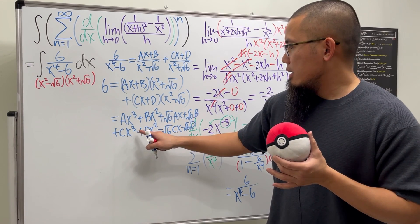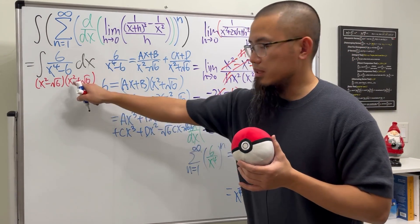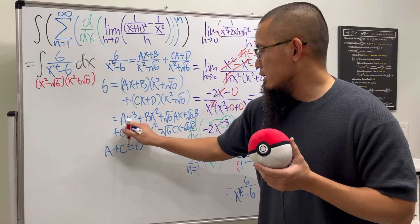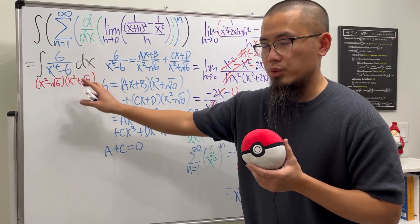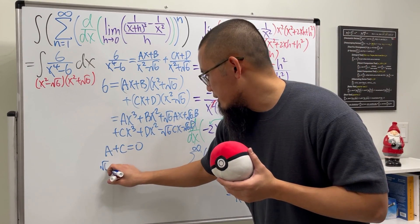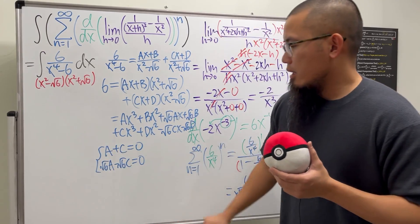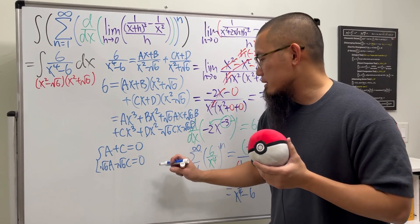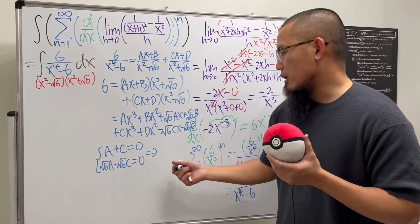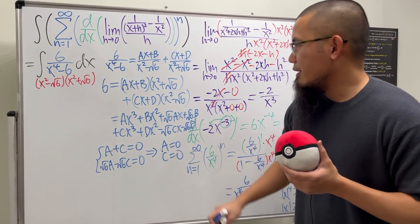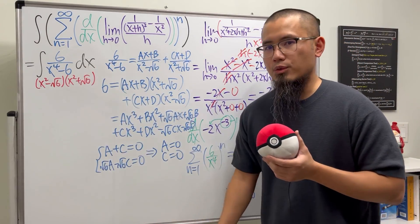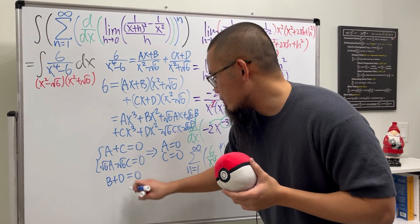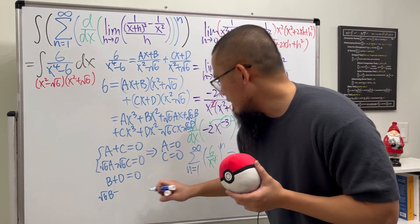Matching coefficients: the x cubed terms give a + c = 0. The x terms give square root of 6 times a minus square root of 6 times c = 0. Combining these two equations: 2 square root of 6 times a = 0, so a = 0. If a = 0, then c = 0 as well. So both linear coefficients vanish, which makes sense for this type of problem.